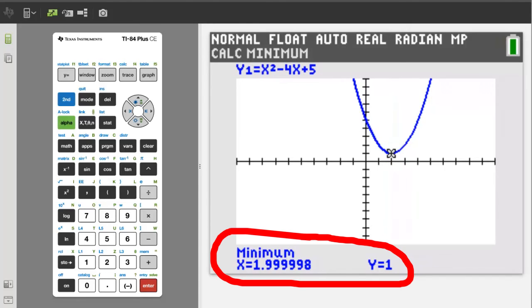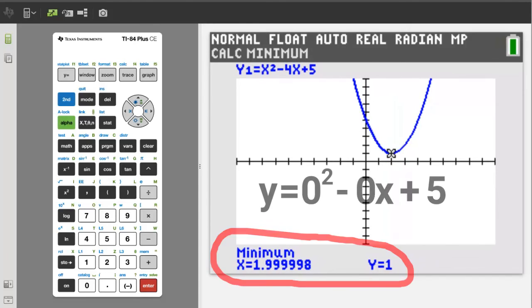To find where the parabola crosses the y axis, just set x equal to 0 in the equation and solve for y. Y will then equal 5. So the parabola crosses the y axis at point (0,5).